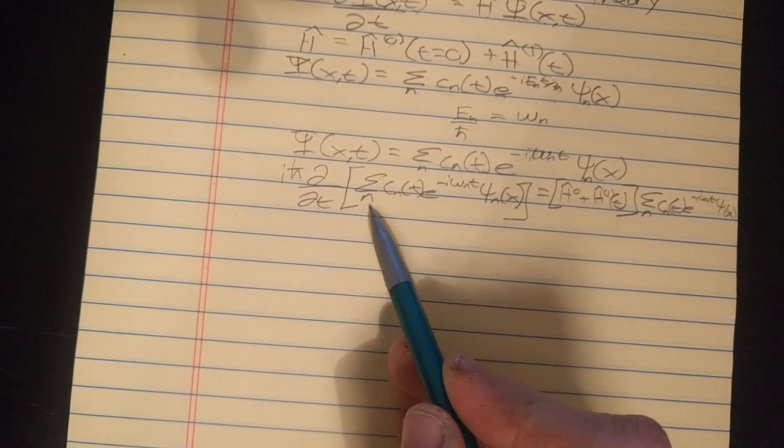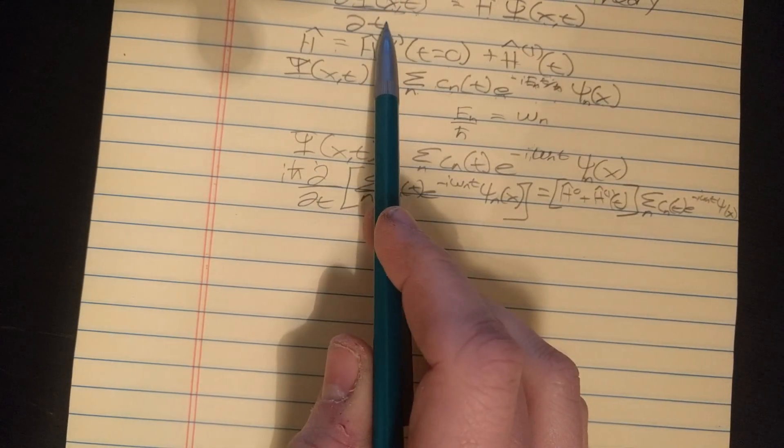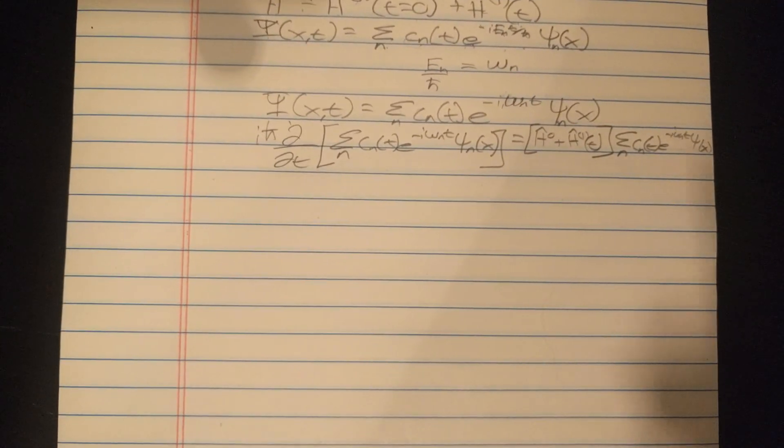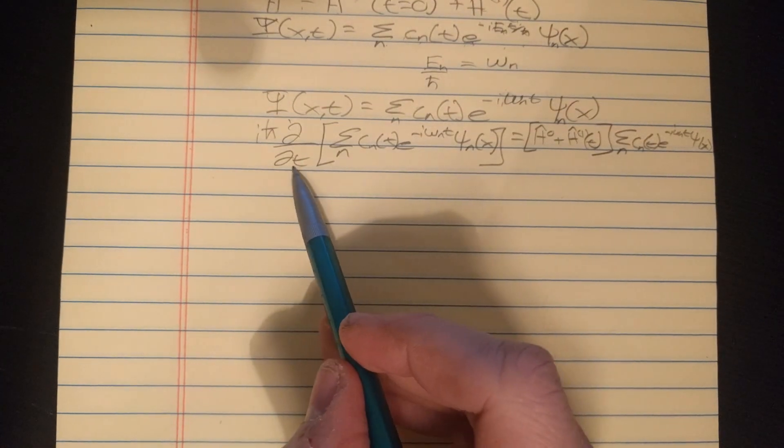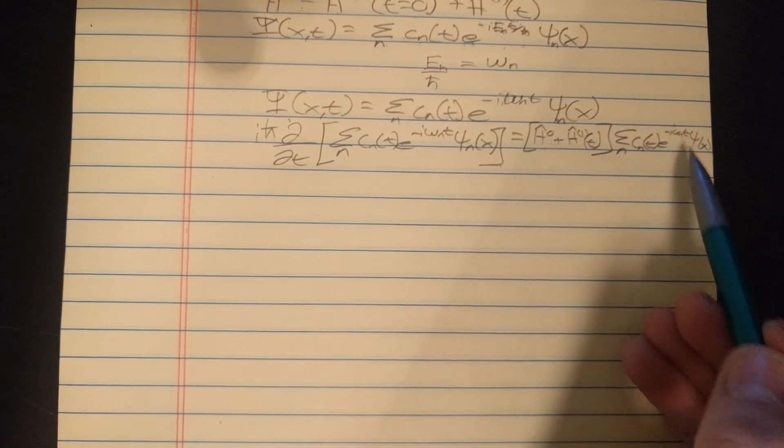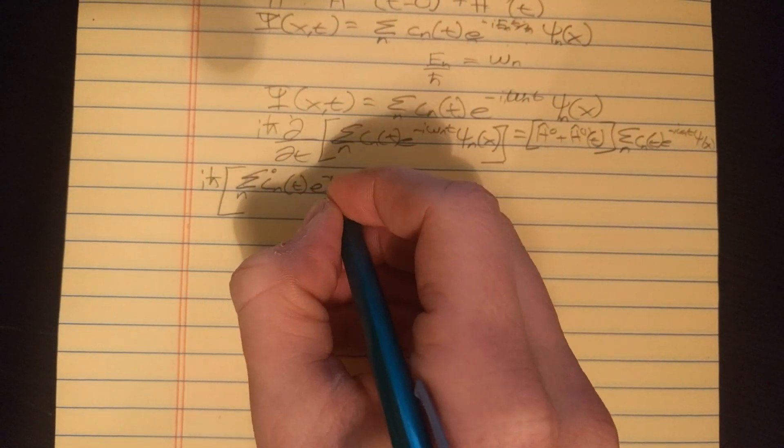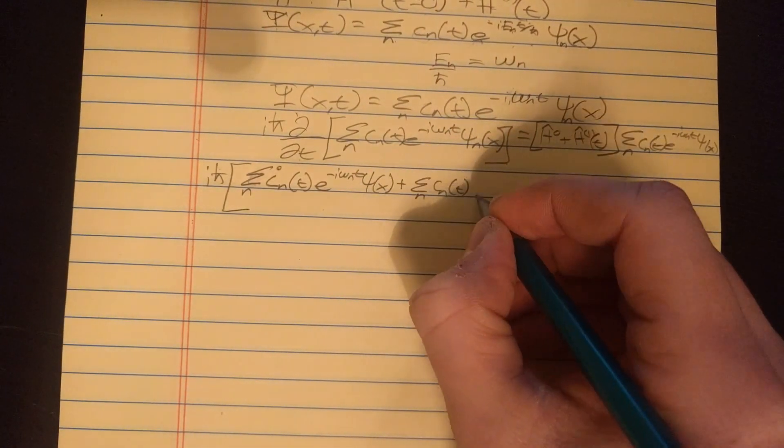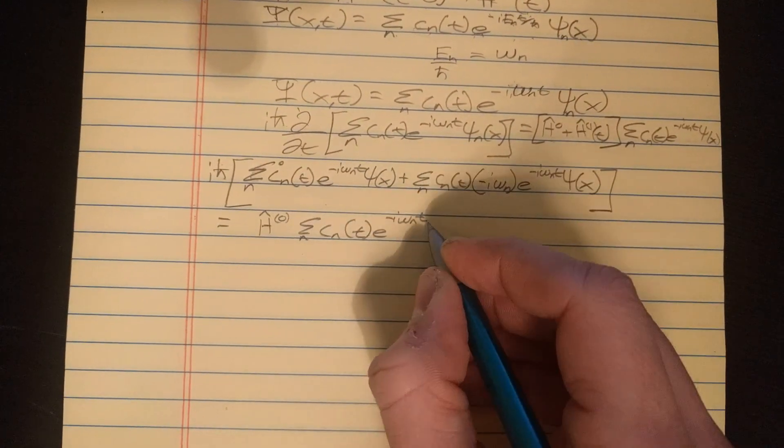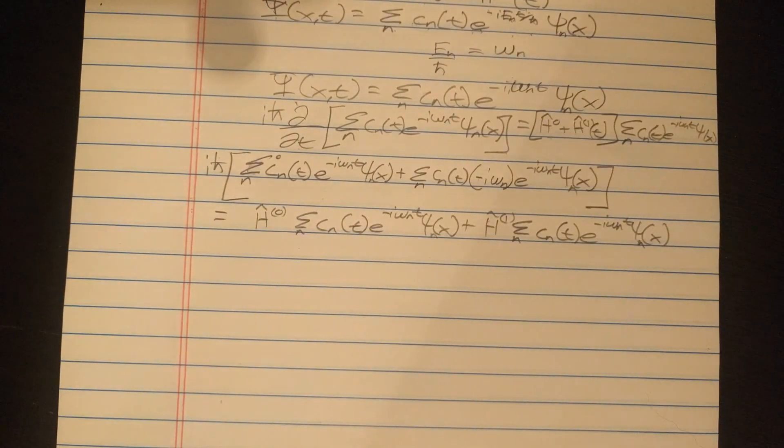What I did there was I just plugged in for capital psi and I plugged in for H into this equation up here. And now we're going to expand it a little bit. We're going to take the time derivative of this thing in square brackets. And I'm going to distribute the Hamiltonians.